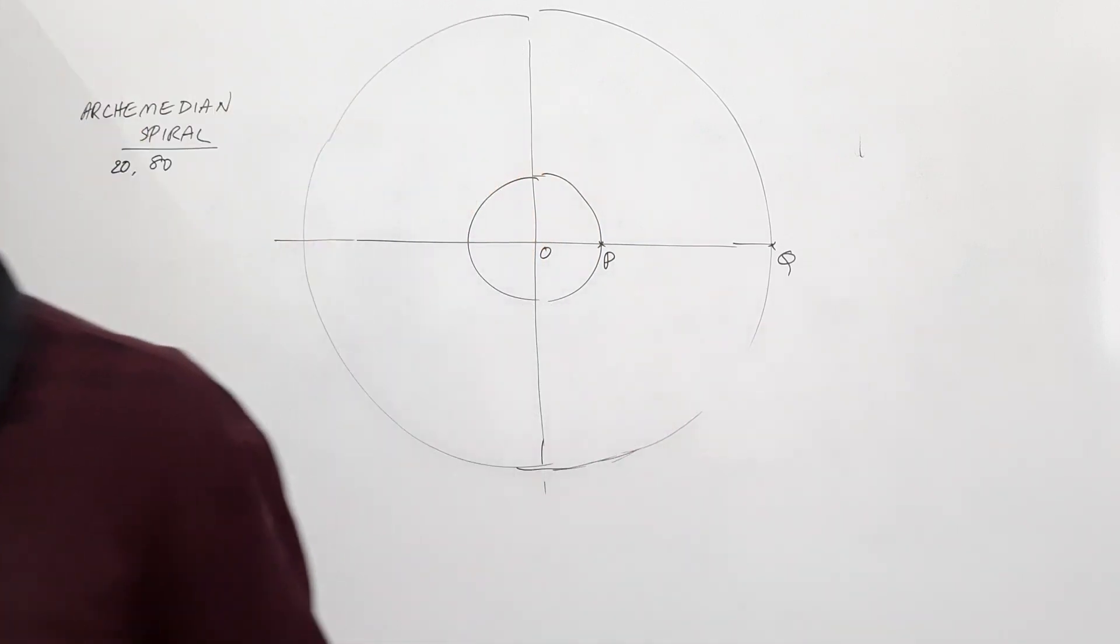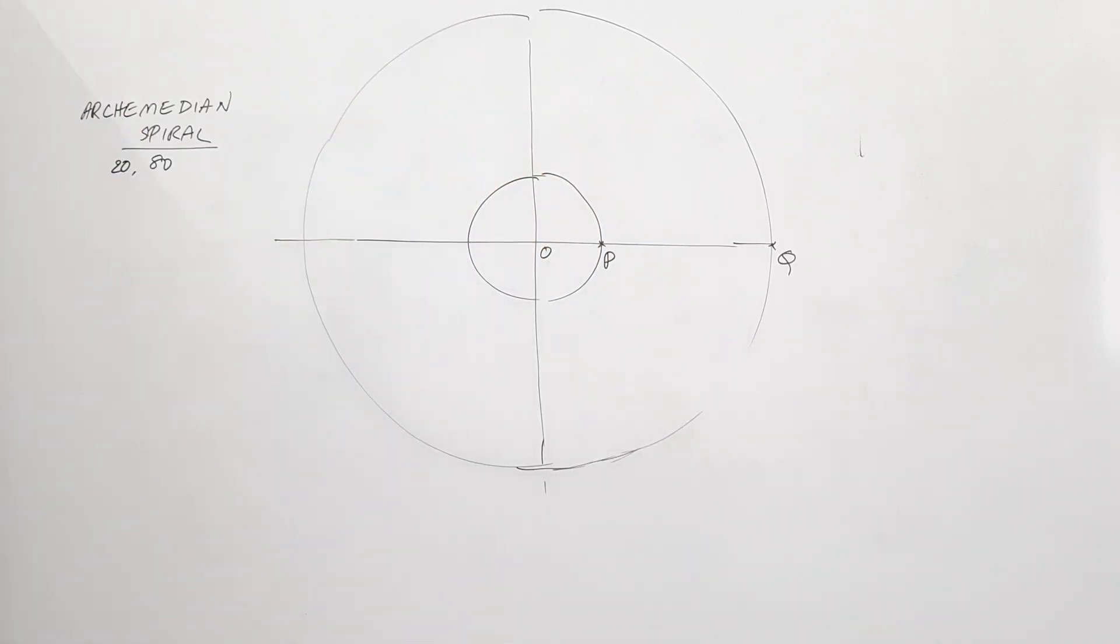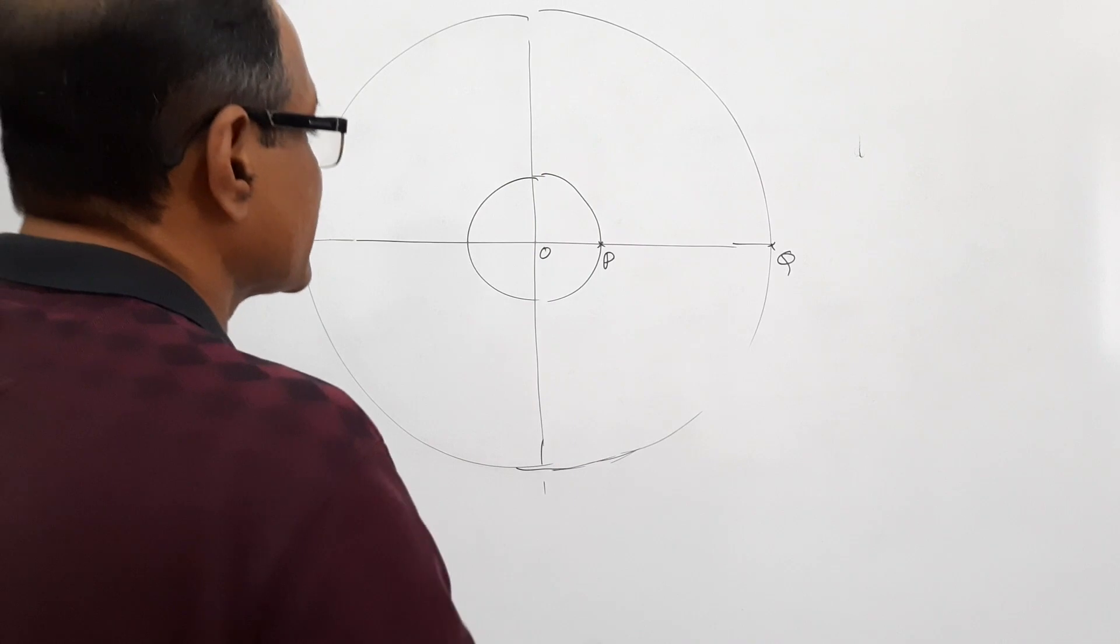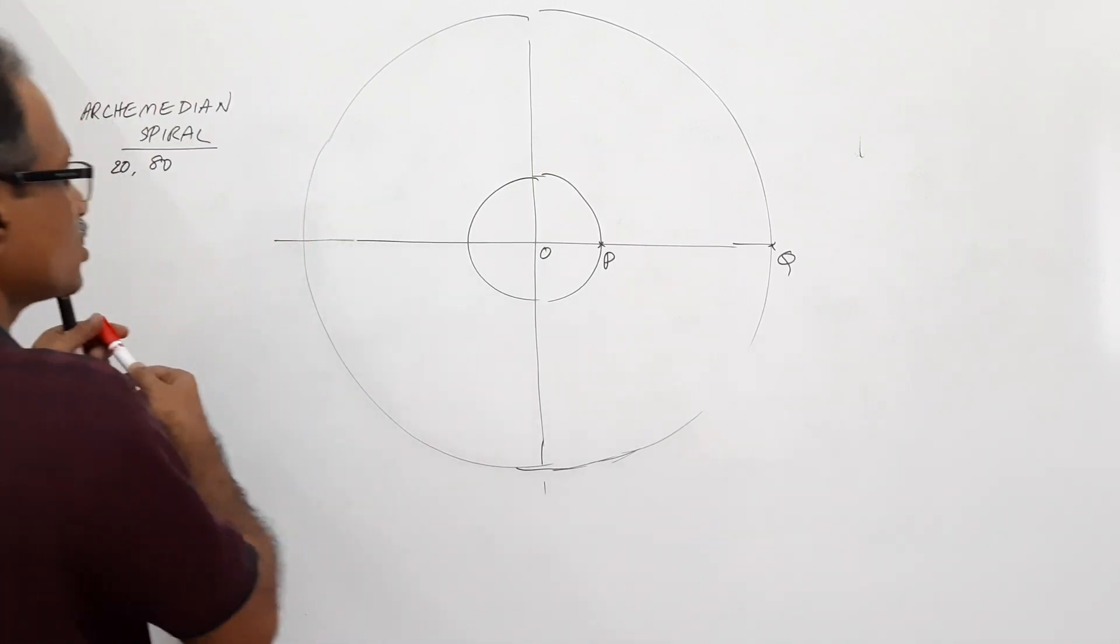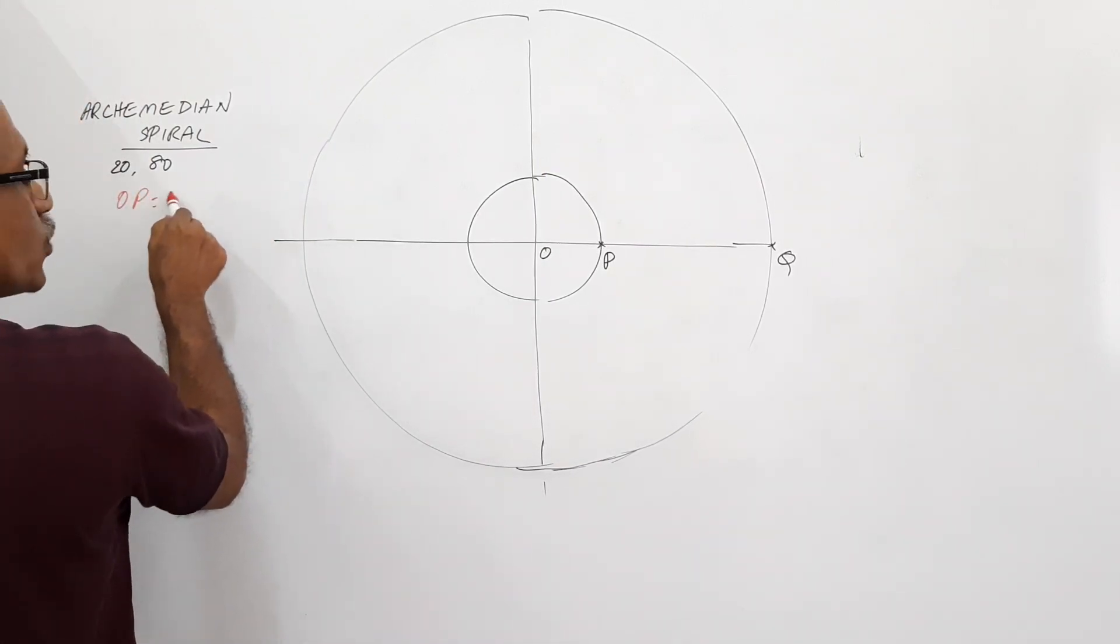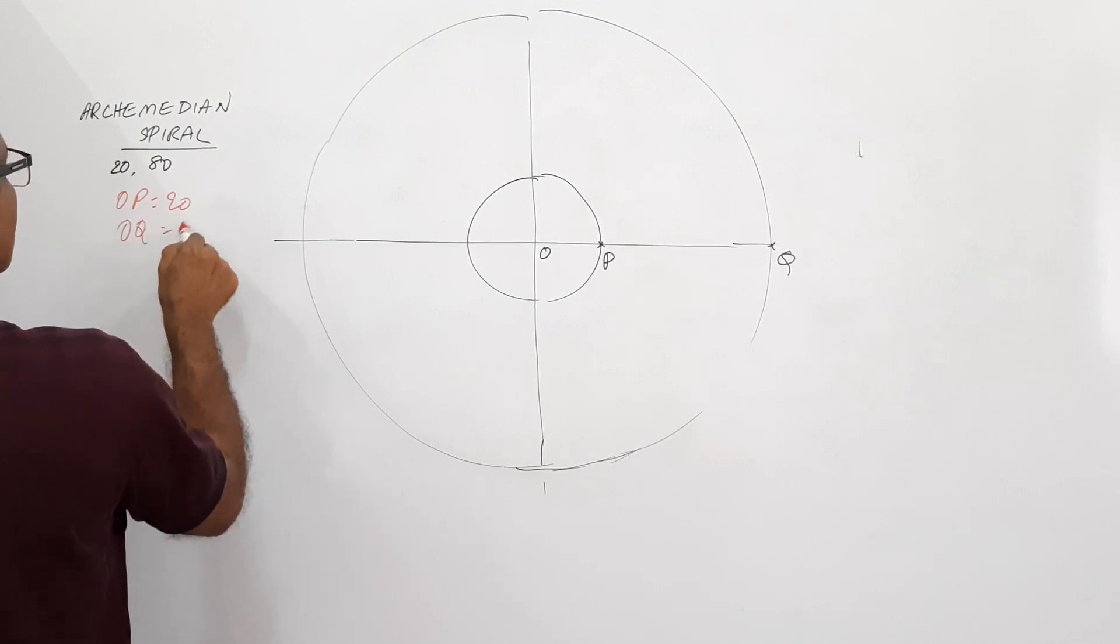In this problem, you have got the minimum radius or initial radius as 20 mm and final radius as 80 mm. That is, OP equals 20, OQ equals 80.